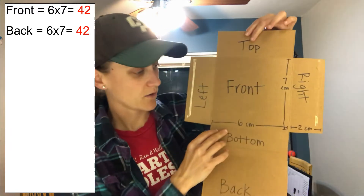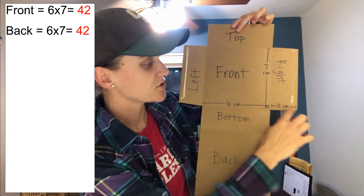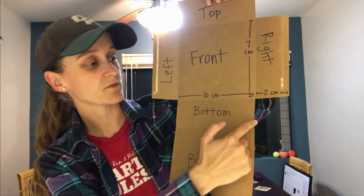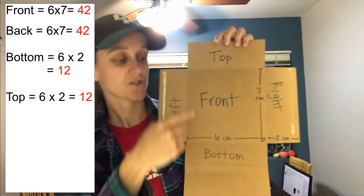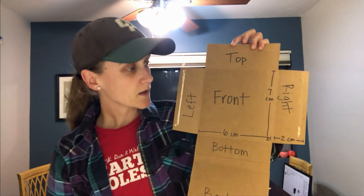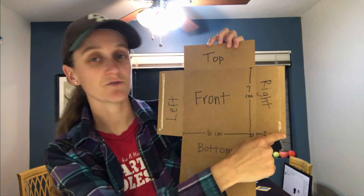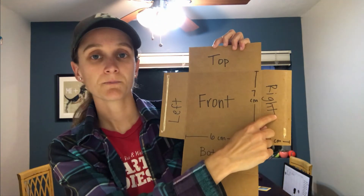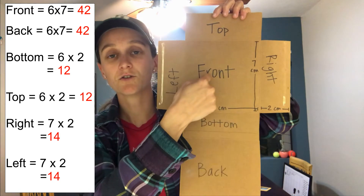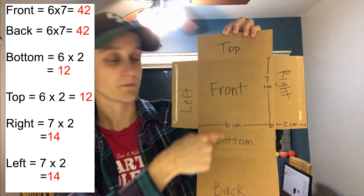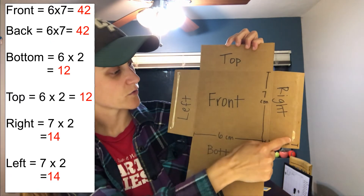Looking at the bottom side, it's six centimeters by two centimeters, so the area is 12 square centimeters. The bottom is the same size as the top, so the top is also 12. For the right side, it's seven centimeters by two centimeters, so seven times two is 14. And the left is the same as the right, so the left is also 14.